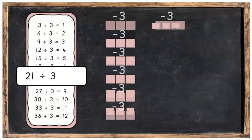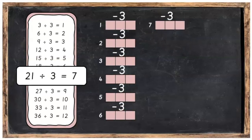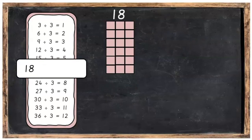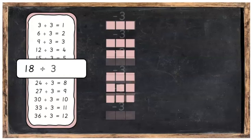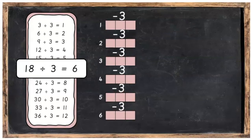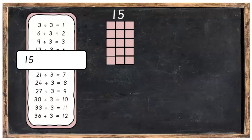21, we can take away 3, 7 times. With 18, we can take away 3, 6 times. There's going to be 6 groups of 3, another way of saying it.